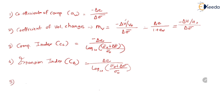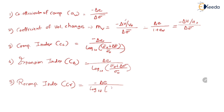The last definition is the recompression index, denoted as CR. The formula is the same as the compression index — it is the slope of the E versus log sigma bar curve for recompressed soils. These are the formulas related to the basic definitions.